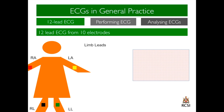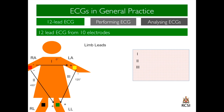Firstly, the limb leads. On a 12-lead ECG piece of paper, the first lead, lead 1, is placed on the top left. It represents the electrical conductance through the heart as seen between the left arm electrode and the right arm electrode. Thus, its vector is roughly 0 degrees. Lead 2 represents the electrical conductance between the left leg and the right arm. Lead 3 between the left leg and the left arm.